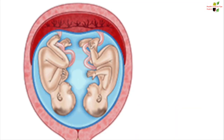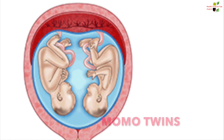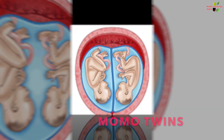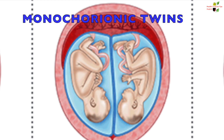This type of twins, having only one placenta and one amniotic sac, is called monochorionic and monoamniotic — the short term given for this type of twins is mono twins. The twins sharing the placenta but having different amniotic sacs are known as monochorionic twins.